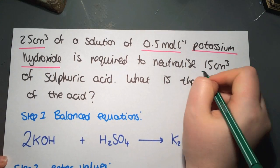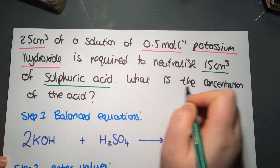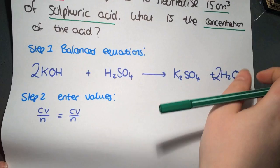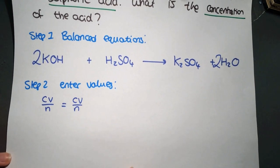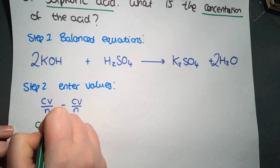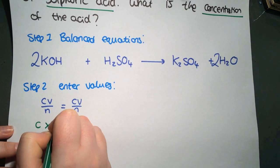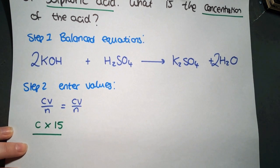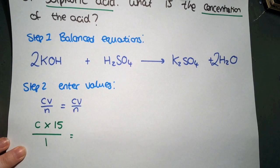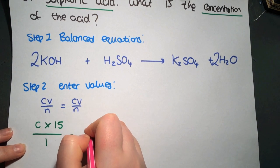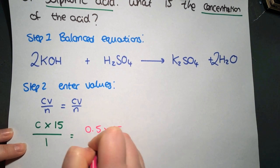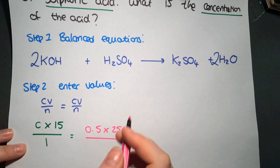So we have 25 centimeters cubed of a solution of 0.5 moles per liter potassium hydroxide. It's required to neutralize 15 centimeters cubed of sulfuric acid. What is the concentration of the acid? So again we're going to put the acid on the left and the alkali on the right. Acid on the left, we are working out concentration, so we can leave that as C. We are multiplying it by the volume which was 15 and we're dividing by N which is the number in front of the sulfuric acid, so in this case it's 1. On the other side we'll put the alkali. So we have a concentration of 0.5 multiplied by a volume of 25 divided by the number in front which is 2.